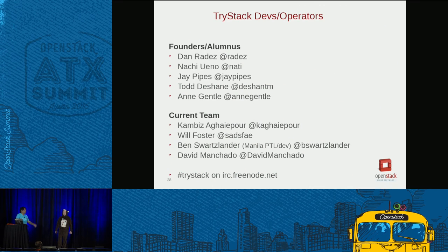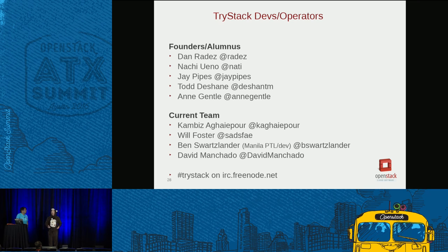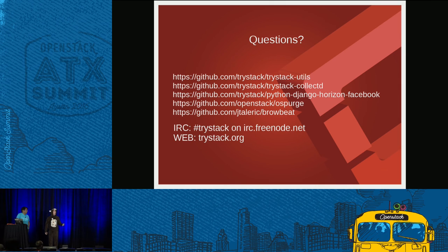These are the folks involved in TryStack. One of the original founders, Nati, is in the audience — thank you for creating it. The current team is Kambiz and myself, Ben Schwartzlander from NetApp, and a new person David Manchata who is also helping out. We're striving to build more of a volunteer framework — we encourage more people to help with operations expertise or moderating public discussions. The Facebook group is still very active with about 24,000 people. You can find us on #tristack on irc.freenode.net. All the code discussed today is available on GitHub, including the TryStack repo, BrowBeat, and OSPurge.